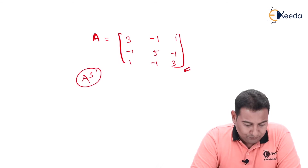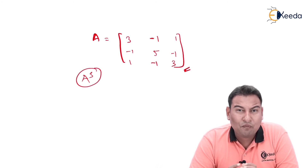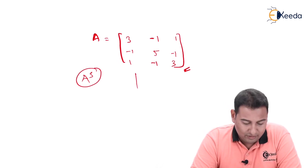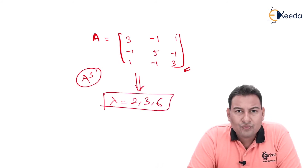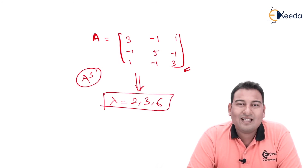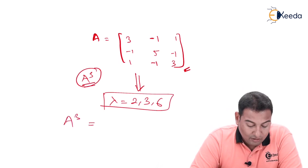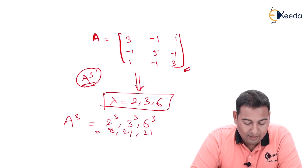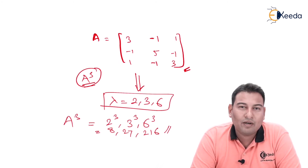Instead, first find the eigenvalues of A, which are λ = 2, 3, and 6 — we have already solved this. The eigenvalues of A cubed are then 2³, 3³, and 6³, giving 8, 27, and 216. So find the eigenvalues of A first and apply the property directly.